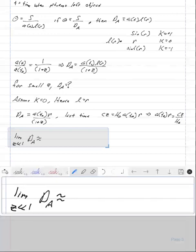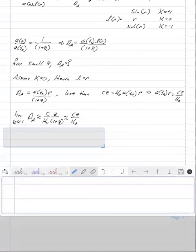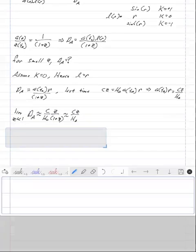But in the small Z approximation, this just becomes CZ over H naught. So that's what the angular diameter distance is, C times Z over H naught. Now Z is the dimensionless number. And so the only thing that has dimensions here is C over H naught.